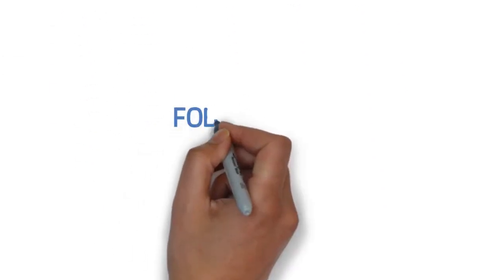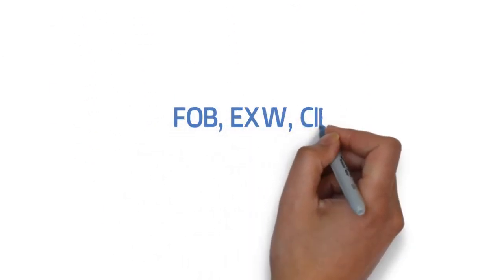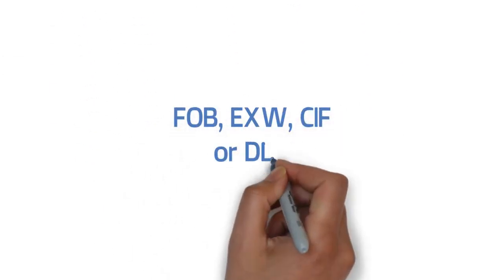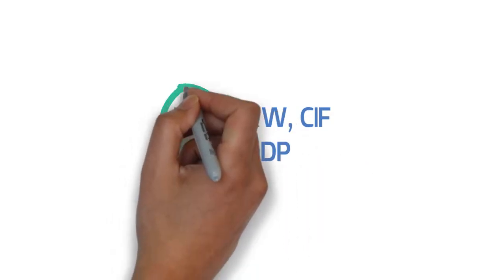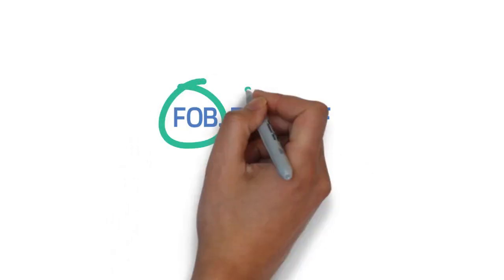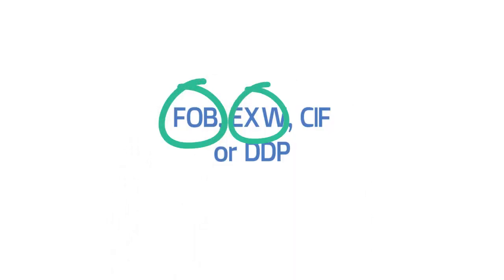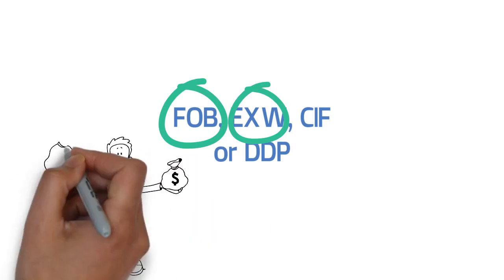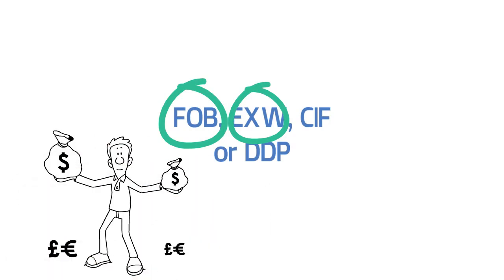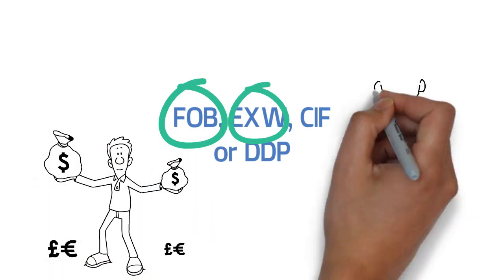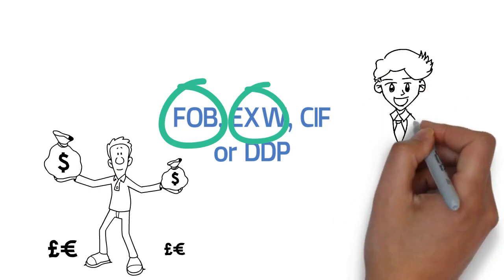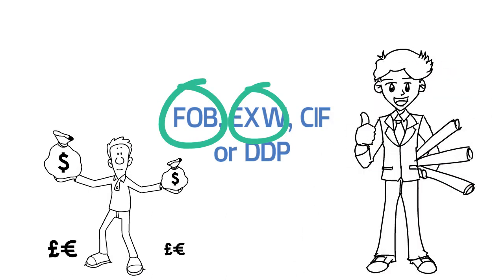So, which is the best for you — FOB, EXW, CIF, or DDP? I recommend going either for FOB or EXW. FOB is highly cost-effective and ensures risk control and safe shipment. EXW gives you complete control of your product's shipping. It's up to you now.